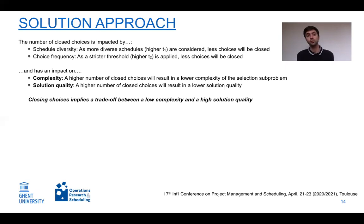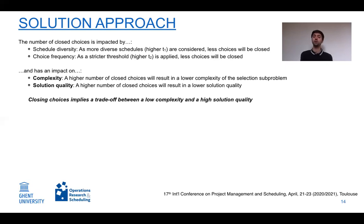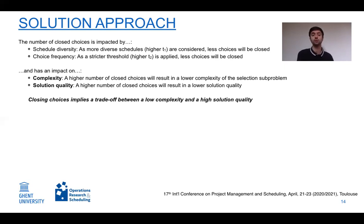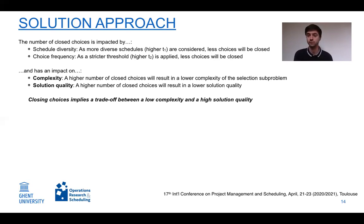The number of closed choices impacts, first, the complexity of the selection subproblem — the objective of our research. Closing more choices lowers complexity by fixing more alternatives. However, it also affects solution quality: a higher number of closed choices reduces the search space and can lower the final solution quality.